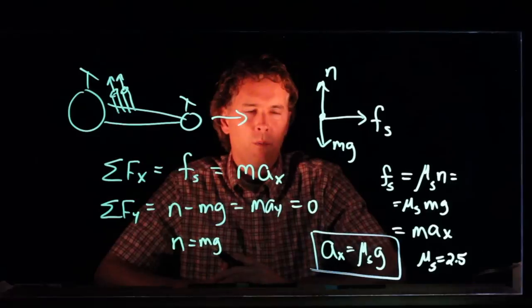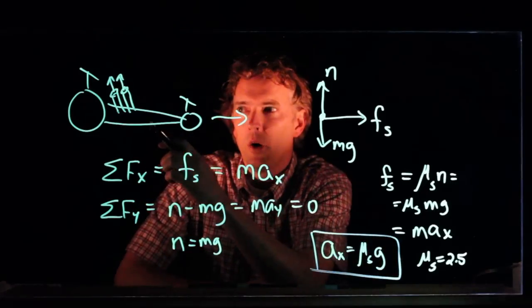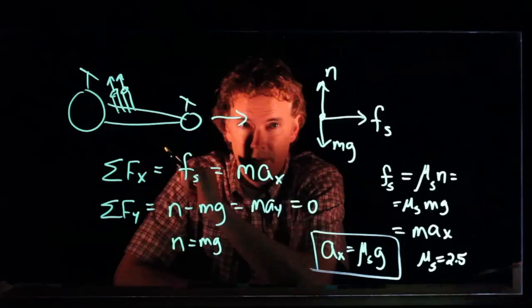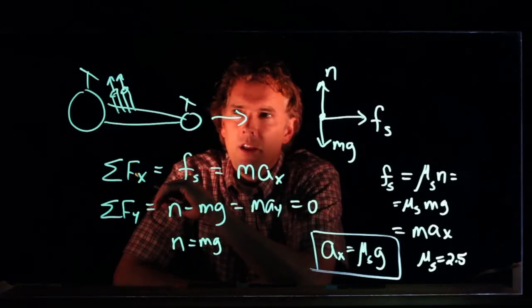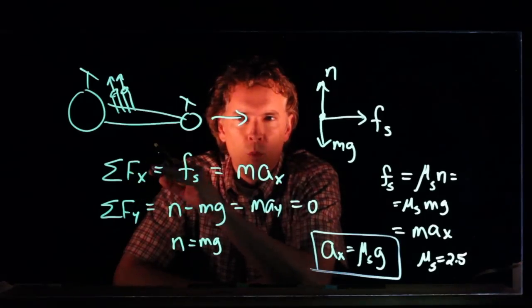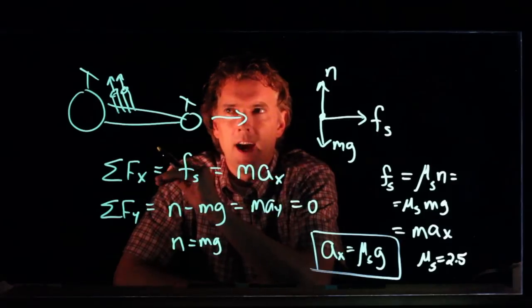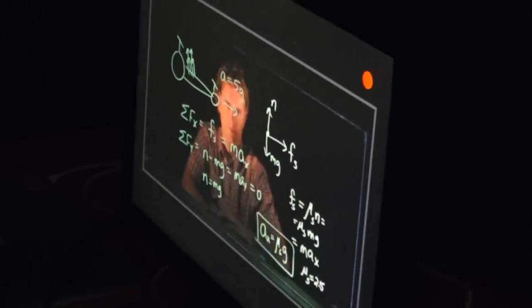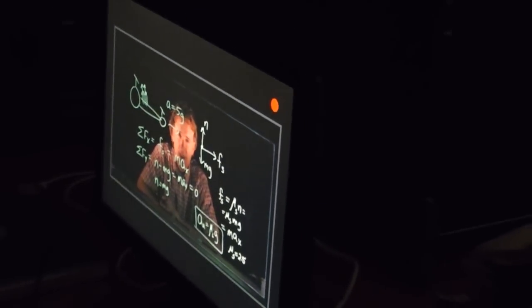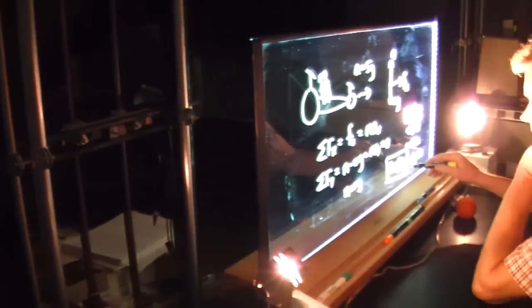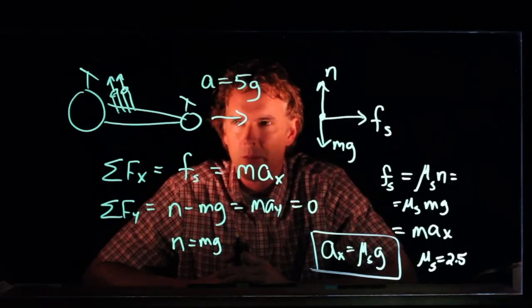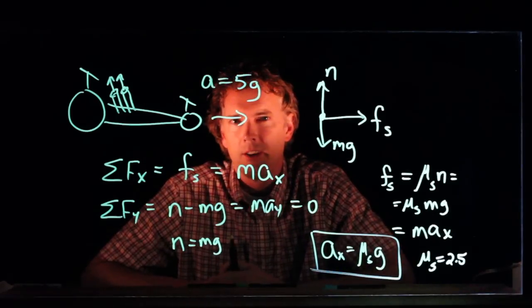When we talked about dragsters, we said they go 0 to 300 miles per hour in under 4 seconds. These are real numbers. We're not making those up. 0 to 300 miles per hour in under 4 seconds. What is that acceleration? It turns out that the acceleration of a dragster is about 5g, 5 times gravity. And yet we just said the most you could do is 2.5 times g. So somewhere we are off by a factor of 2. And this is the really interesting part of this problem. Where are we off by a factor of 2?